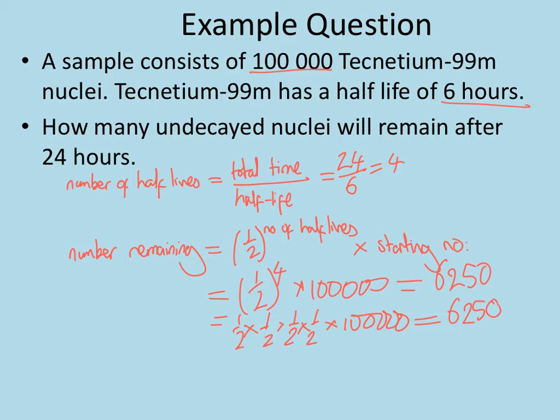The first method using the power is much quicker if you have a larger number of half-lives. If it's two, three, or four half-lives it's fine either way, but if it's ten half-lives, the power method is much quicker. Pause the video now and make a note of that first example, then continue when you're ready for some further examples to try.